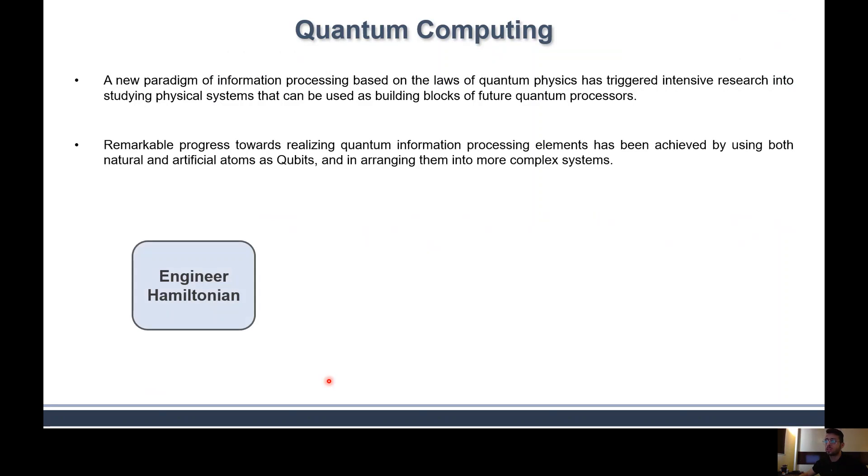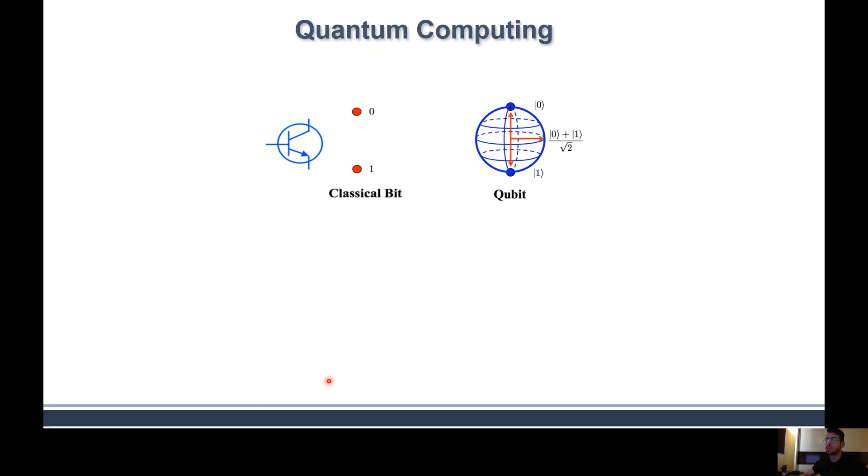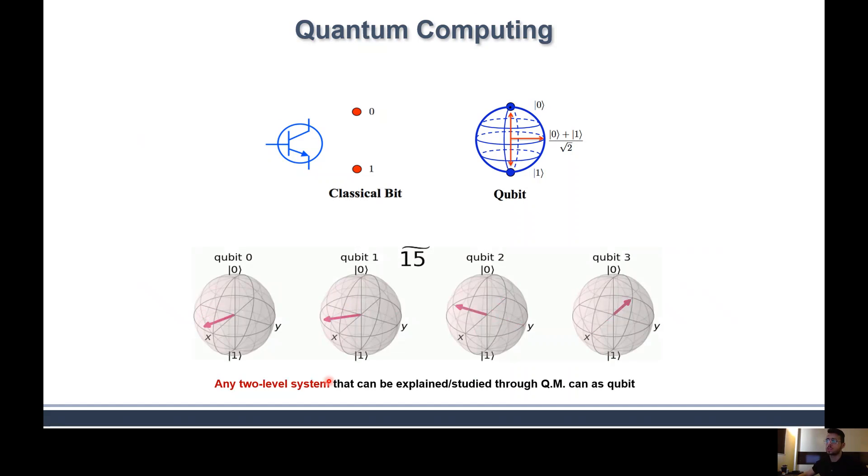This process includes engineering of the Hamiltonian of quantum systems, allowing that system to explore the quantum world, and then measuring the interesting part of the system including the zero and one computational basis. In quantum computing we have a qubit, similar to classical bits built by a transistor, but this qubit has many interesting features such as superposition and entanglement provided by quantum physics. This superposition and entanglement allows the qubit to be more than zero and one, can be in any state between zero and one, which gives quantum computing its power.